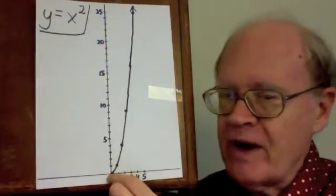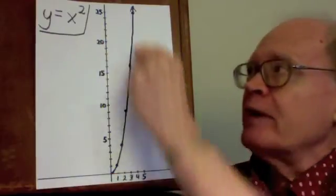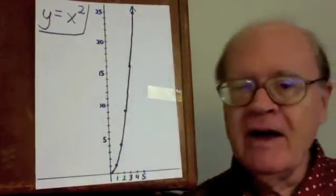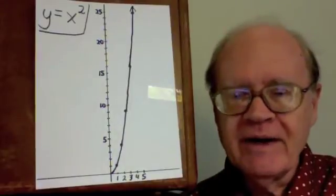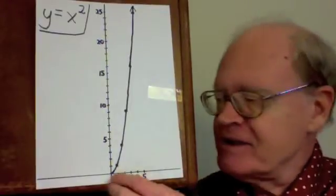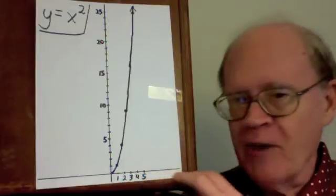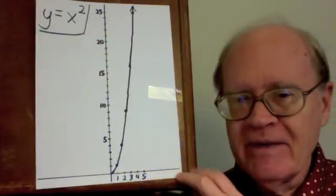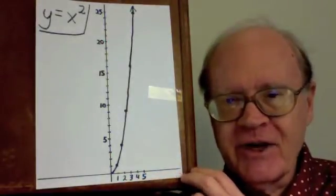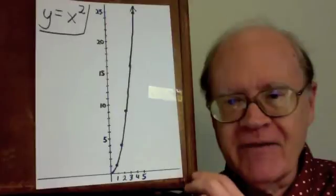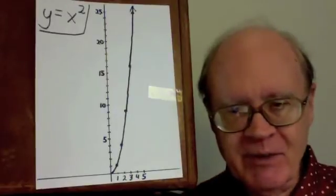5 squared is 25, so I go over 5 and up 25. And so on indefinitely. The x's continue indefinitely to the right, and so does the graph, continuing indefinitely to the right as it gets steeper and steeper.